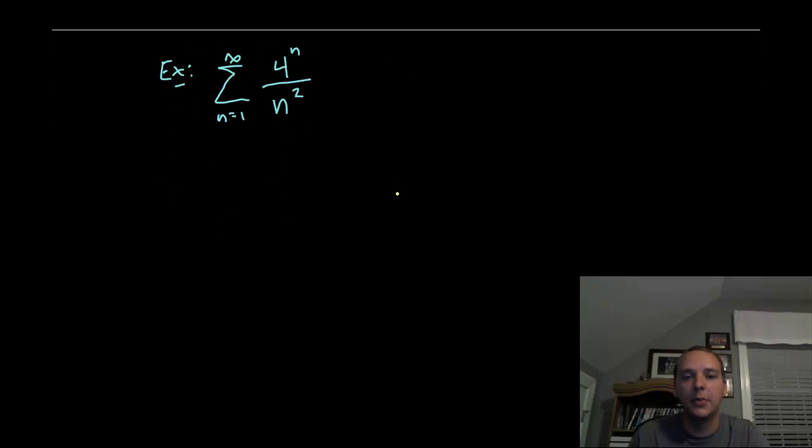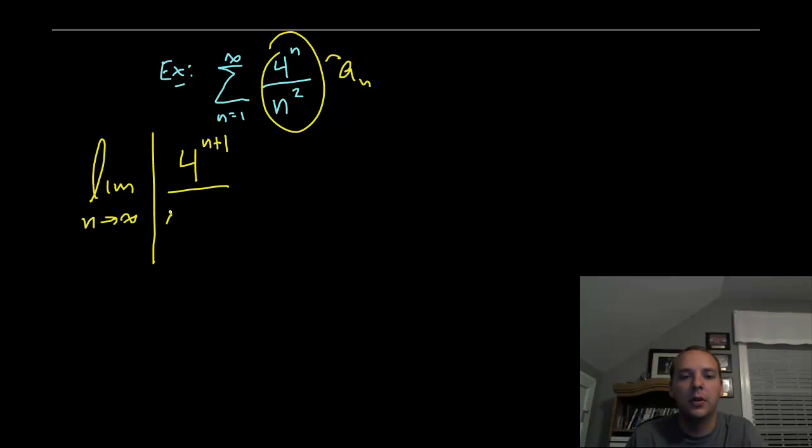Alright, as our last example, we'll try this one real quickly. This will be a sub n. We'll take the limit as n goes to infinity absolute value. 4 to the n plus 1 over n plus 1 quantity squared divided by this. But we'll take the reciprocal instead and multiply. Same type of deal as before. This happens a lot. 4 to the n plus 1 over 4 to the n. You're going to bring a 4 out.